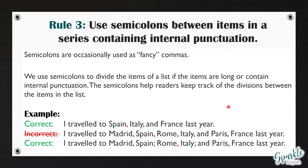If we look at this first example: 'I traveled to Spain, Italy, and France last year.' Here we put commas to separate each country. But what if we wanted to list the cities and the countries? Writing 'I traveled to Madrid, Spain, Rome, Italy, and Paris, France last year' with only commas would be incorrect. Someone who didn't know that Paris was in France or Rome was in Italy would think you went to six different places: Madrid, Spain, Rome, Italy, Paris, and France. That doesn't make sense because Madrid is in Spain — that's just one place. Because there's already punctuation in this list, we have to use semicolons to separate these into groups.